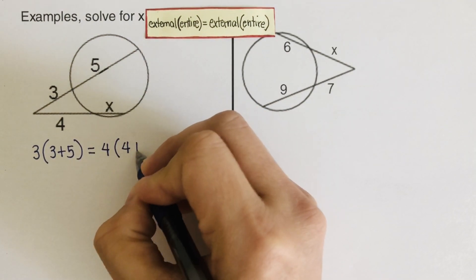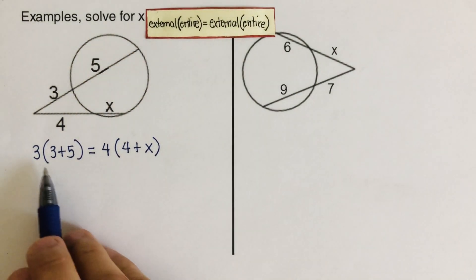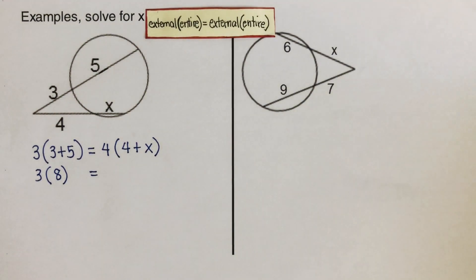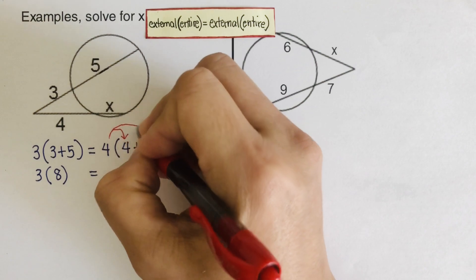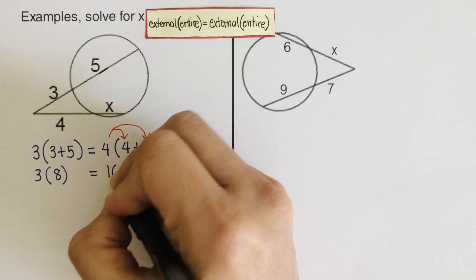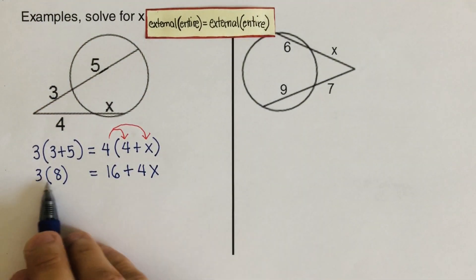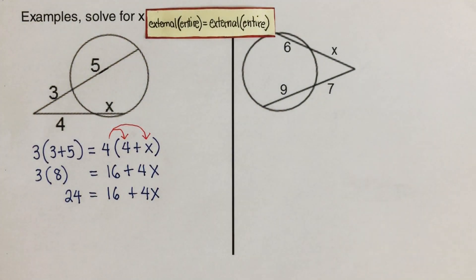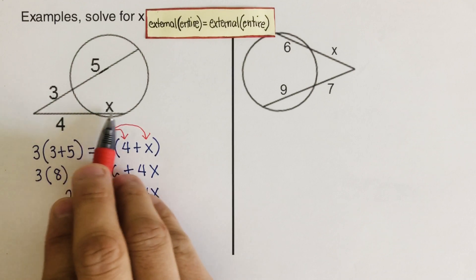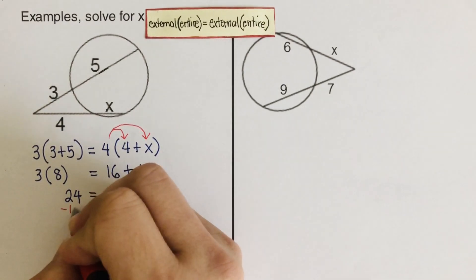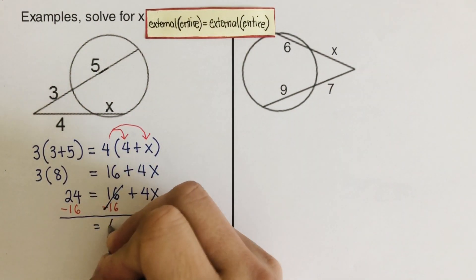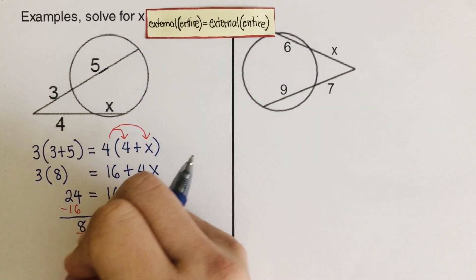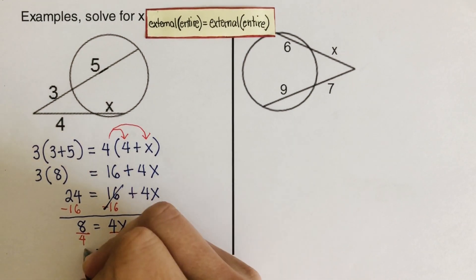The next step is to simplify. Three plus five is 8, so we have 3 times 8 on the left. On the right, we can't add 4 and x directly, but we can distribute: 4 times 4 is 16, plus 4x. Then 3 times 8 is 24, equal to 16 plus 4x. To isolate x, we subtract 16 from both sides, leaving 4x equals 8.